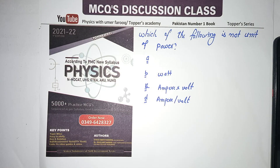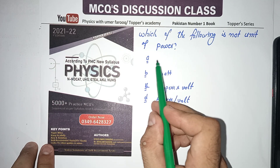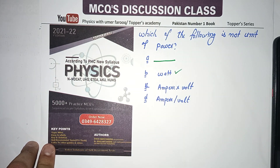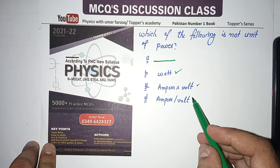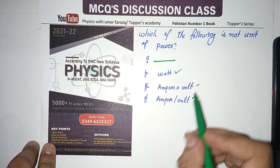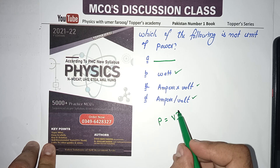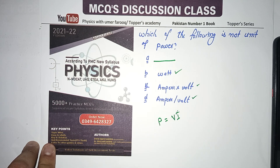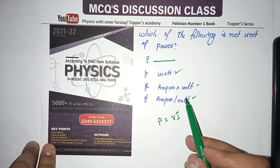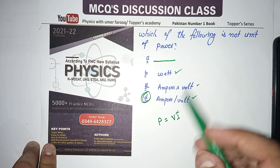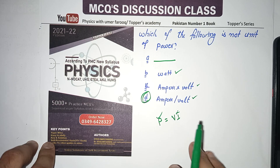Next MCQ: Which of the following is NOT a unit of power? Since P = V × I (voltage times current), volt × ampere = watt, which IS a unit of power. Ampere divided by volt is NOT a unit of power, so that option is the correct answer here.